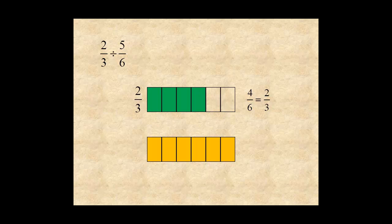In the second unit, five parts are shaded. So it represents five sixths.